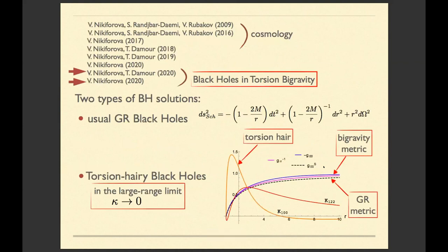So I did some studies of this theory. And my last studies with Professor Thibaut Damour are about black holes in torsion bigravity. Namely, we found recently that there are two types of black holes in this model. The first type is usual black holes, exactly the same as in general relativity, maybe not exactly the same, but roughly speaking, exactly the same.